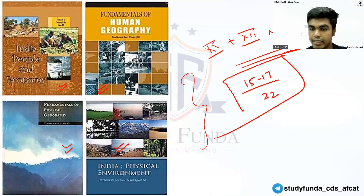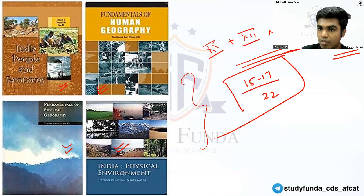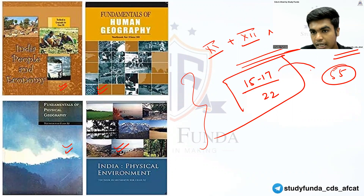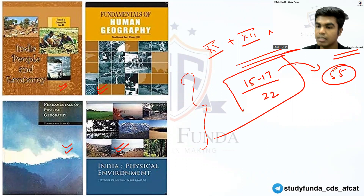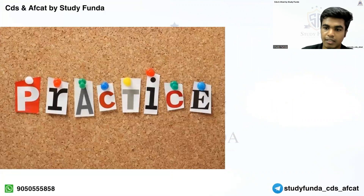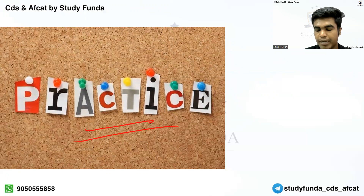In GS, students usually score around 42 to 45 marks. To score 45 marks, you need to get around 50 to 55 questions correct. If you pick up 17 questions just from geography, that is a huge gain — because science and current affairs are also comparatively easy, so geography can play a very important role in qualifying the exam.